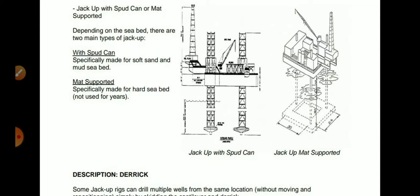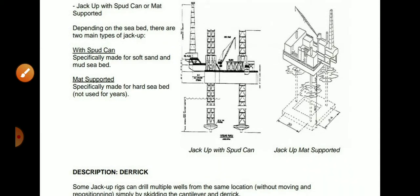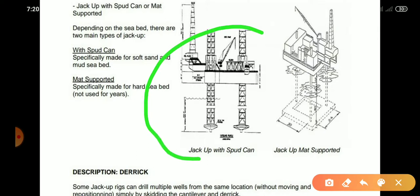Depending on the seabed, there are two main types of jackups: spud can and mat supported. The spud can type is specifically made for soft sand and mud seabed. The mat supported type is specifically made for hard seabed. Here you can see these two types of jackup illustrated.